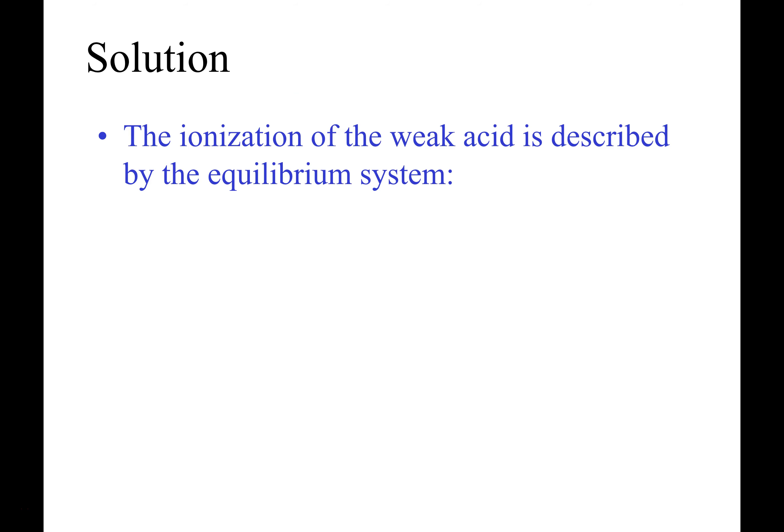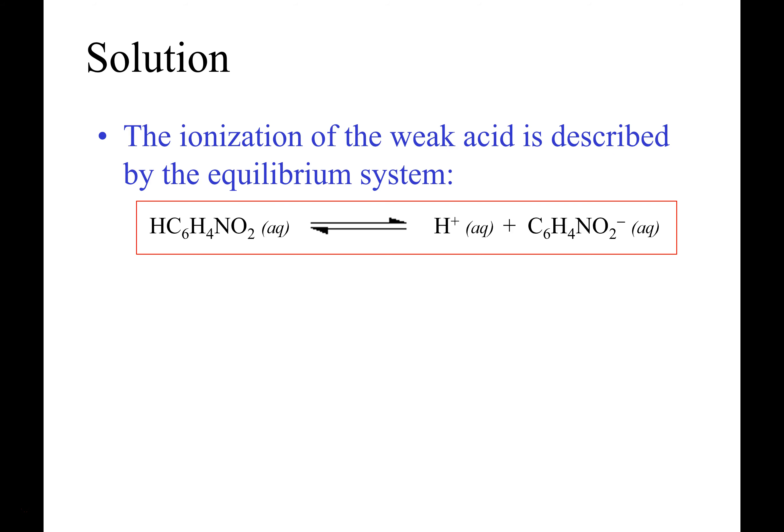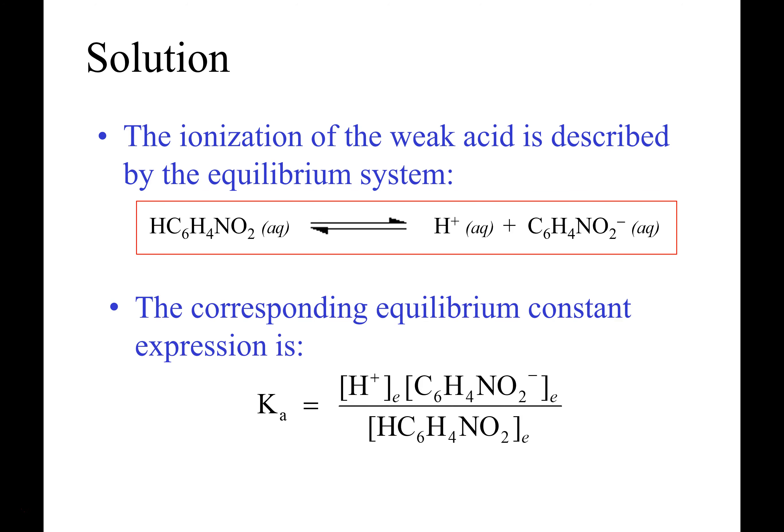This is the weak acid in equilibrium with its H⁺. This thing with the negative — the C₆H₄NO₂⁻ — we're going to call it the conjugate base. When you work these problems, you really should be writing this down even if I don't ask you to. What we do with equilibrium expressions is we put the molar concentration of the products raised to their stoichiometric coefficients divided by the molar concentration of the reactant raised to its stoichiometric coefficient.